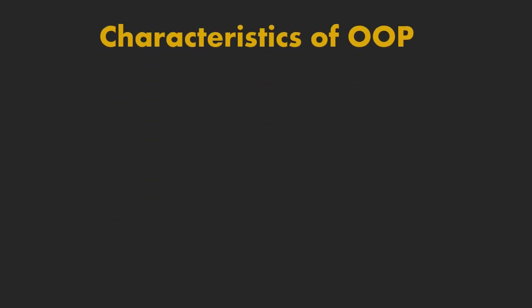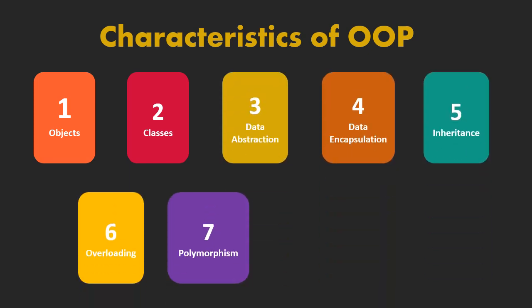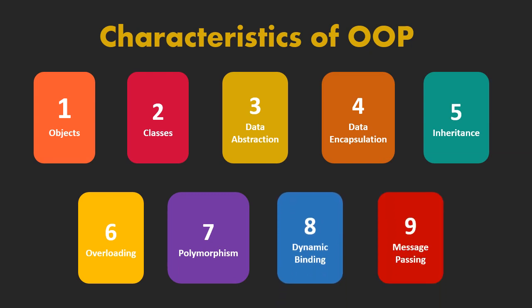Hello students, welcome to another session. In today's session, let us study the characteristics of object-oriented programming. Because of these characteristics, object-oriented programming is one of the most successful programming paradigms used everywhere in developing software and technologies. The different characteristics are: objects, classes, data abstraction, data encapsulation, inheritance, overloading, polymorphism, dynamic binding, and message passing.